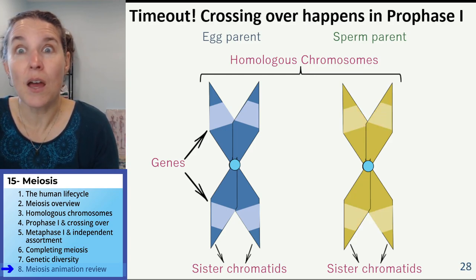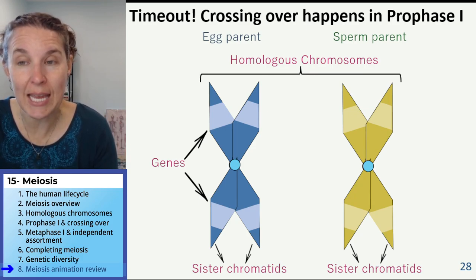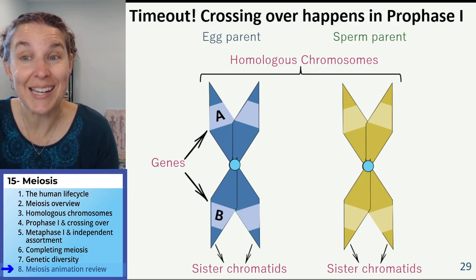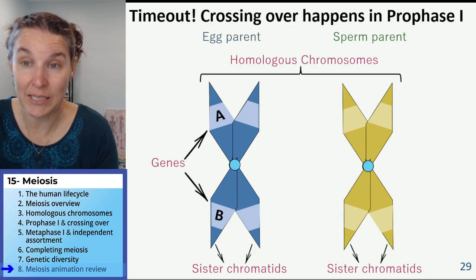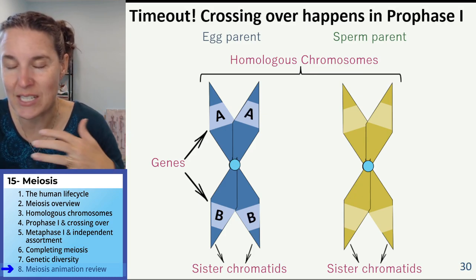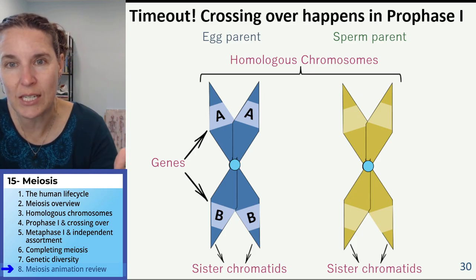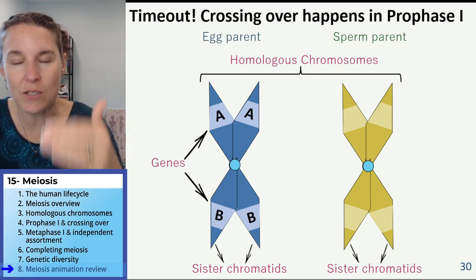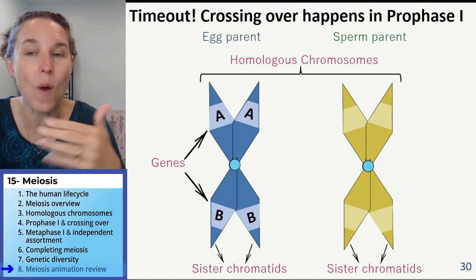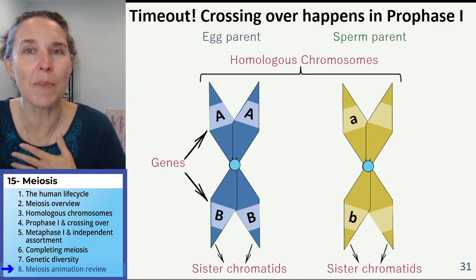Homologues also have the same genes, but not necessarily the same alleles. Remember that sisters have identical alleles. If it's the A gene and the B gene, sister chromatids both have big A and in this case big B. But homologues can have different forms.